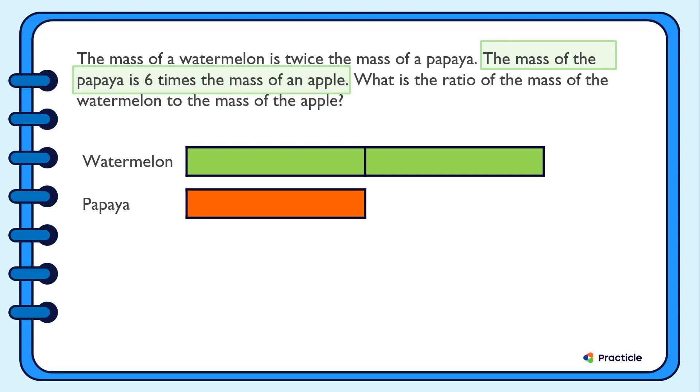Let's divide this bar into six smaller equal parts. And then we are going to draw one of these smaller parts to represent the mass of the apple. This is six times of this. Can you see that?